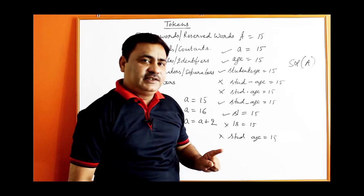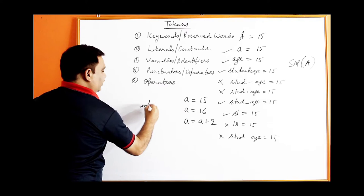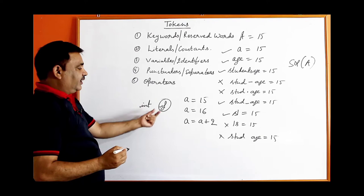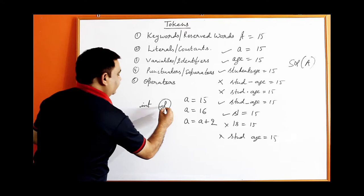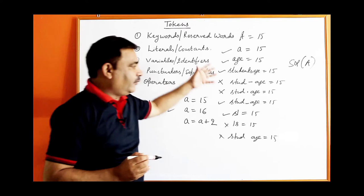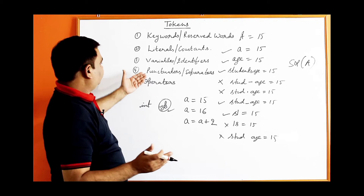Fifth rule: you cannot use keywords as variable names. For example, if you want to declare a variable named 'if', you cannot do that because 'if' is a reserved word. You could write 'IF' and that would be correct, since Java is case-sensitive. Be careful while using variable names and follow these rules.